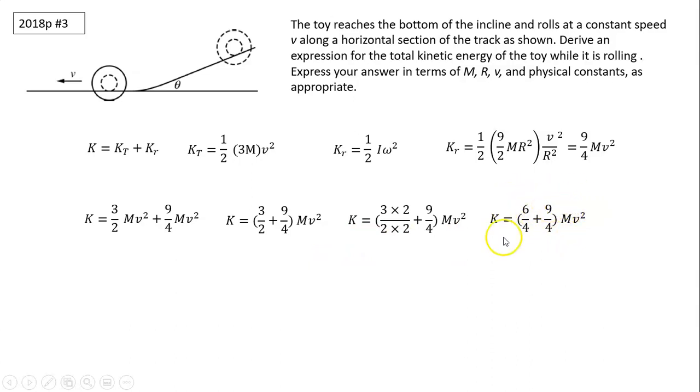6 plus 9 is 15. That becomes 15 over 4MV squared. And that's the answer. I hope it helps. Thanks for watching. See you next time.